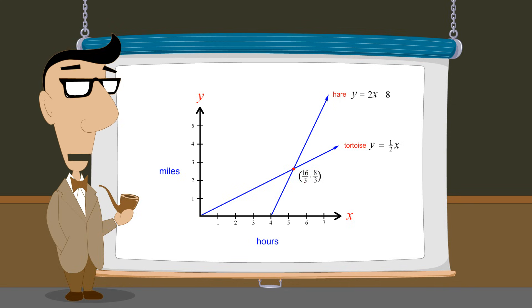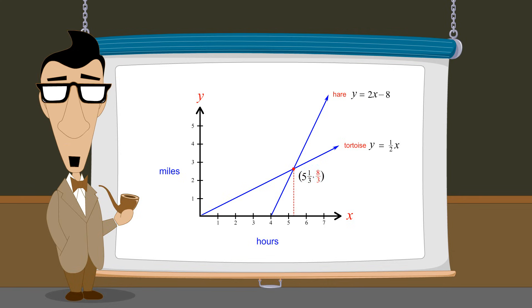Converting these fractions to mixed numbers, we see that this point represents an elapsed time of five and one-third hours and a distance of two and two-thirds miles from the starting point.